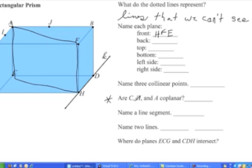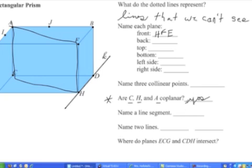Just because a plane isn't drawn in the diagram doesn't mean it doesn't exist. I knew right away they had to be coplanar because three points define a plane — C, H, and A are three points, so there is definitely a plane that goes through all three. The answer is yes, they are coplanar.